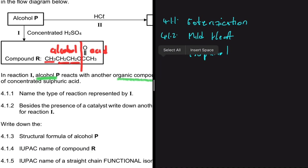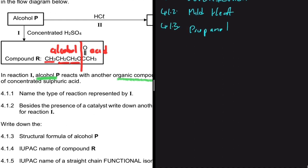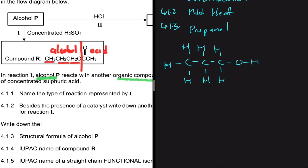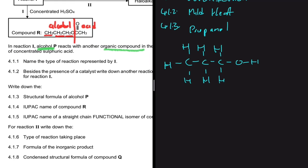The question asks for the structural formula and IUPAC name. To draw propanol, we have one, two, three carbons, we place OH at the end, and then fill in the hydrogens everywhere else. That is the structure of the alcohol used — alcohol P.